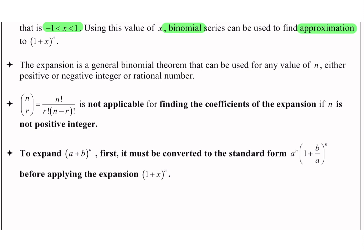nCr = n! / (r! · (n−r)!) is not applicable for finding the coefficient of the expansion if n is not a positive integer. Kombinatorial notation ni dia tak applicable untuk cari coefficient pada expansion sekiranya n dia tu bukan positive integer — dia tak boleh buat. Sebab itulah dia tak boleh guna kombinatorial notation ni. Jadi, kalau macam mana kita nak buat, kita kena buat dalam bentuk factorial lah.